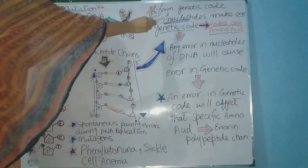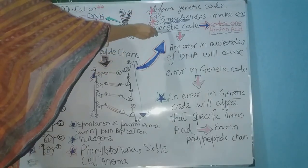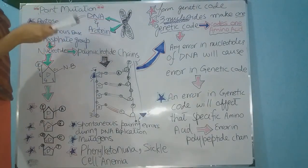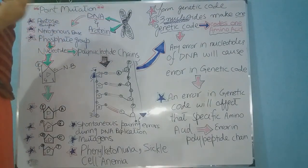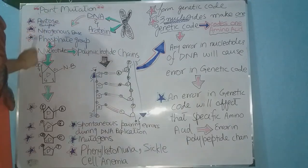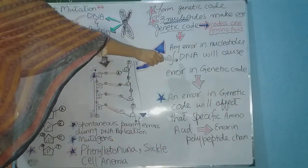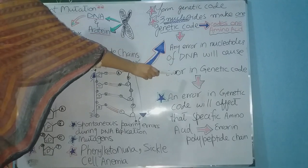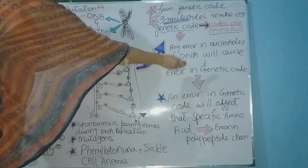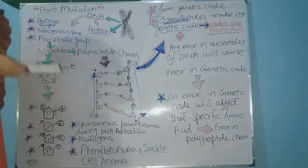If any error occurs in the three nucleotides of a genetic code, there will be a mutation, and that mutation is called point mutation. So any error in the nucleotides of DNA will cause an error in the genetic code, and an error in the genetic code will cause an error in the structure of the amino acid.